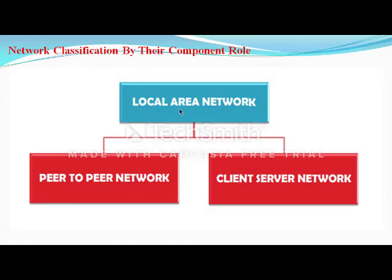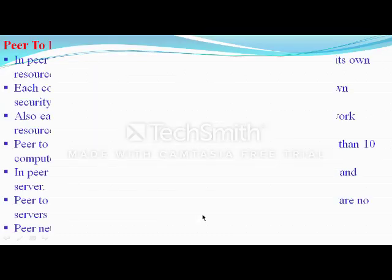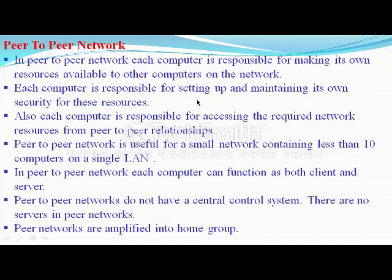Local area networks can be divided into peer-to-peer networks and client-server networks. In a client-server network, each client is connected to the server and all communication goes through the server. In a peer-to-peer network, each system transmits information directly from one system to another. Each computer is responsible for its own resources and its own security, and for accessing required network resources. The peer-to-peer network is small, typically containing up to 10 computers on a single LAN.